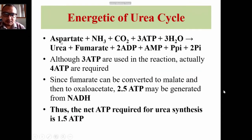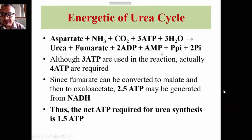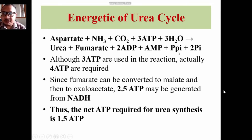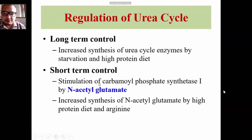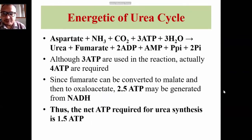The energetics of the urea cycle: aspartate + ammonia + CO2 + 3 ATP + 3 H2O → 1 urea + 1 fumarate + 2 ADP + 1 AMP + 1 pyrophosphate. Although three ATP appear to be used, actually four ATP are required — two in the first reaction and two (equivalent) in the citrulline-to-argininosuccinate step. Since fumarate can be converted to malate and then oxaloacetate, 2.5 ATP may be generated from NADH, making the net ATP required for urea synthesis 1.5.